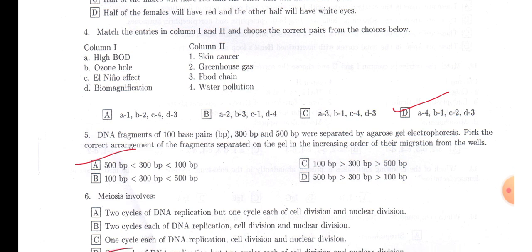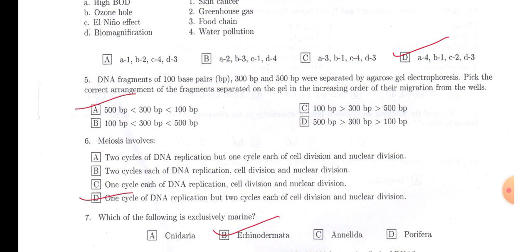In question number four, there is a matching. High BOD indicates water pollution, so A4. And ozone hole can cause skin cancer due to ultraviolet radiation falling on our skin, so A4 B1 will be the answer, that is in option D.